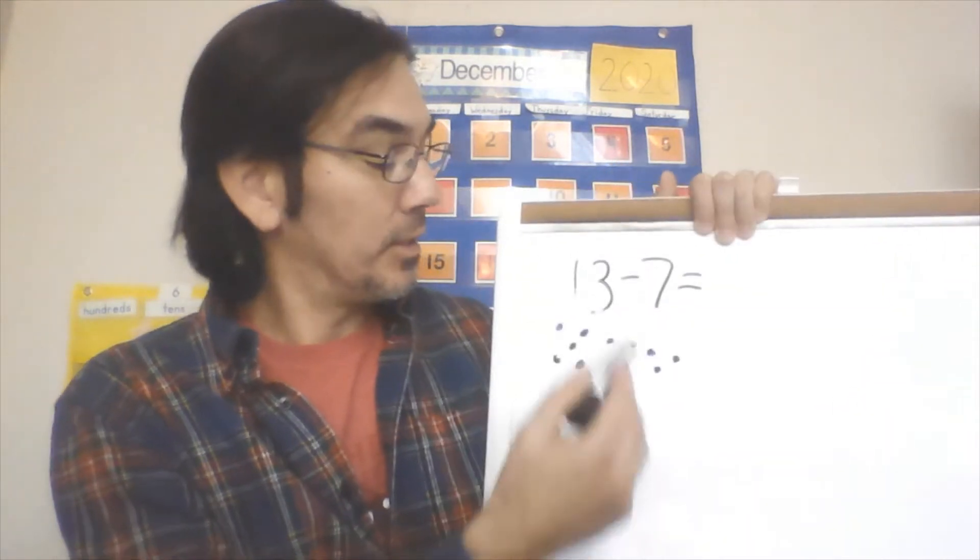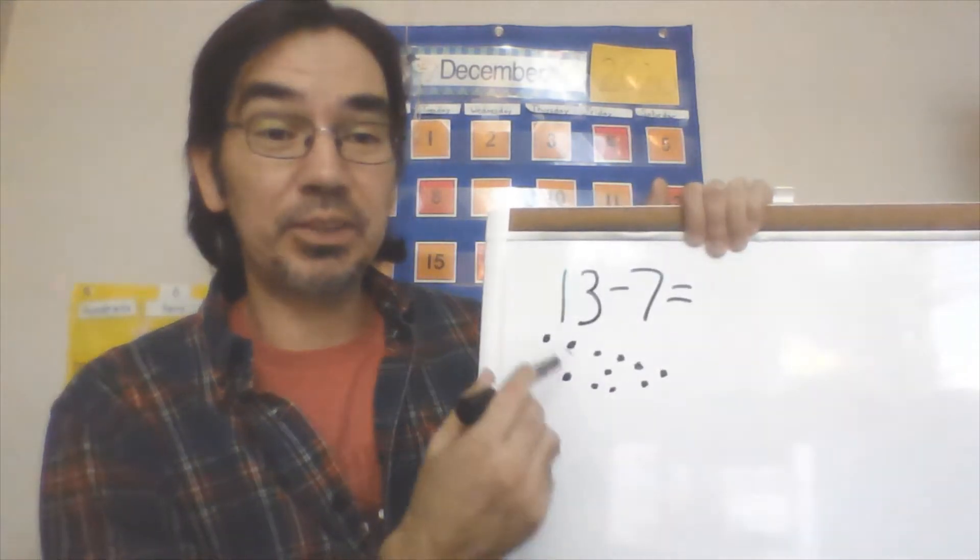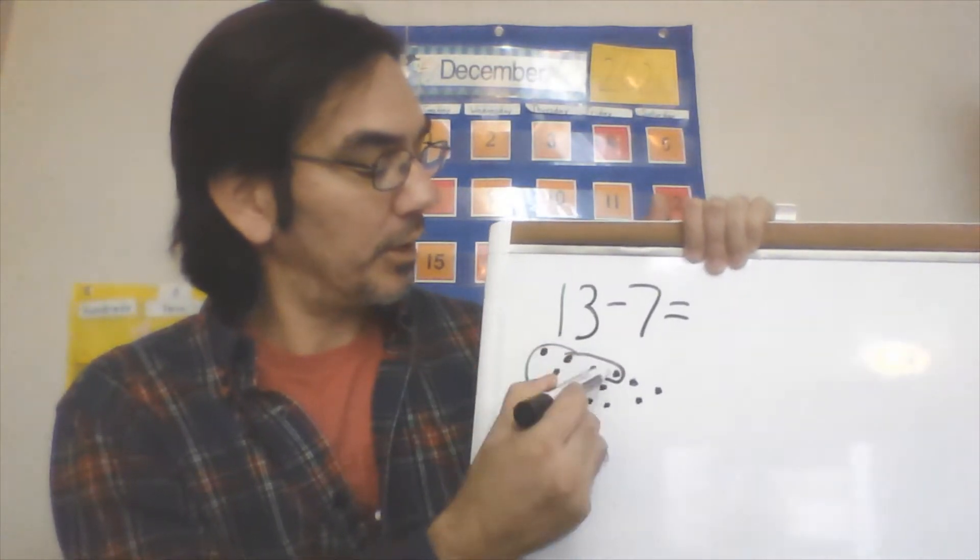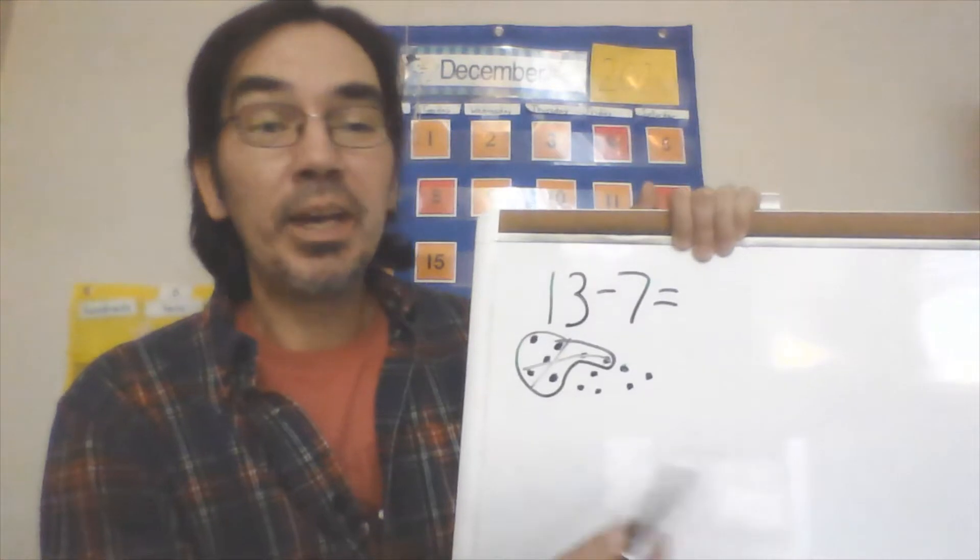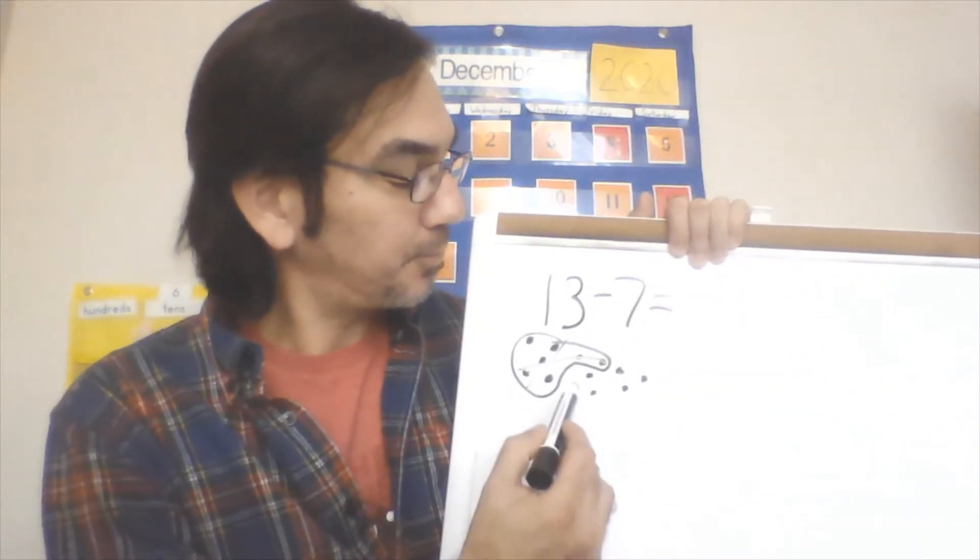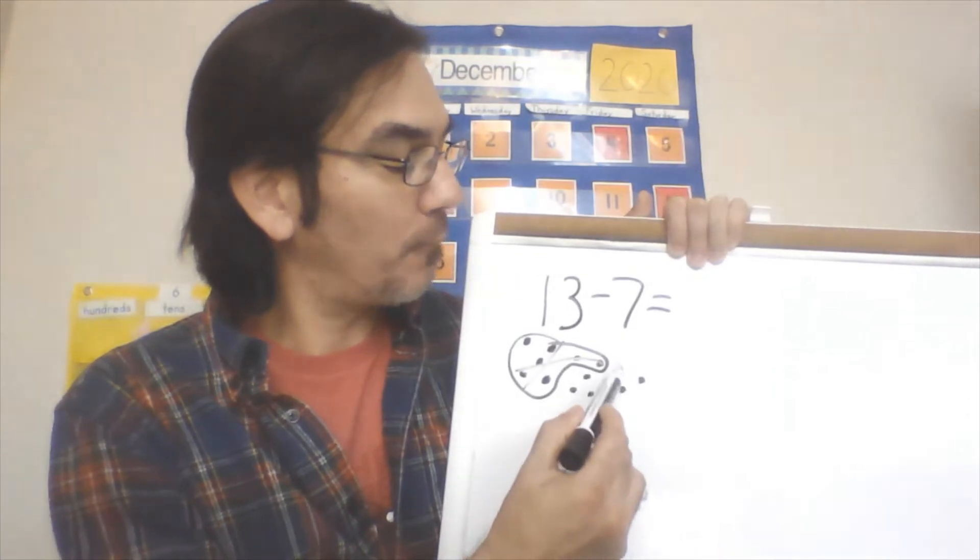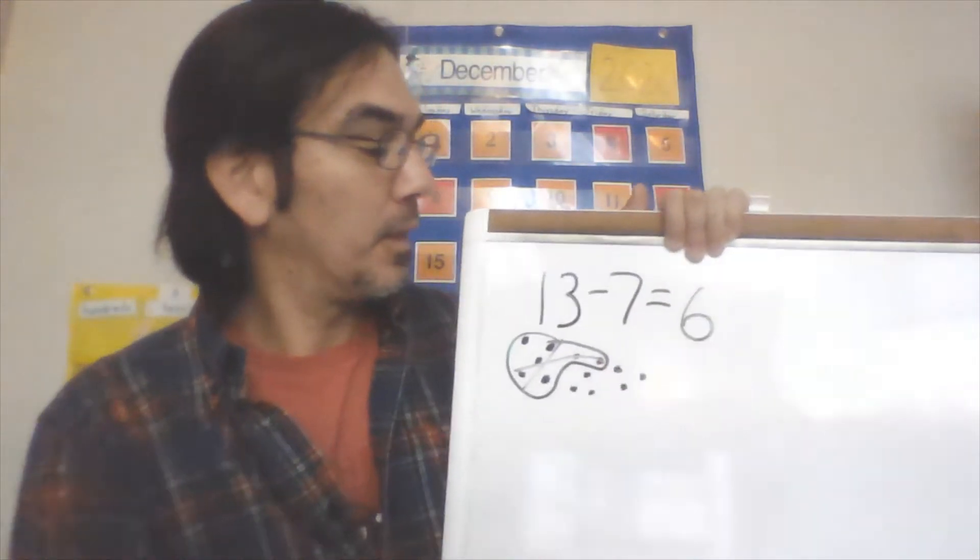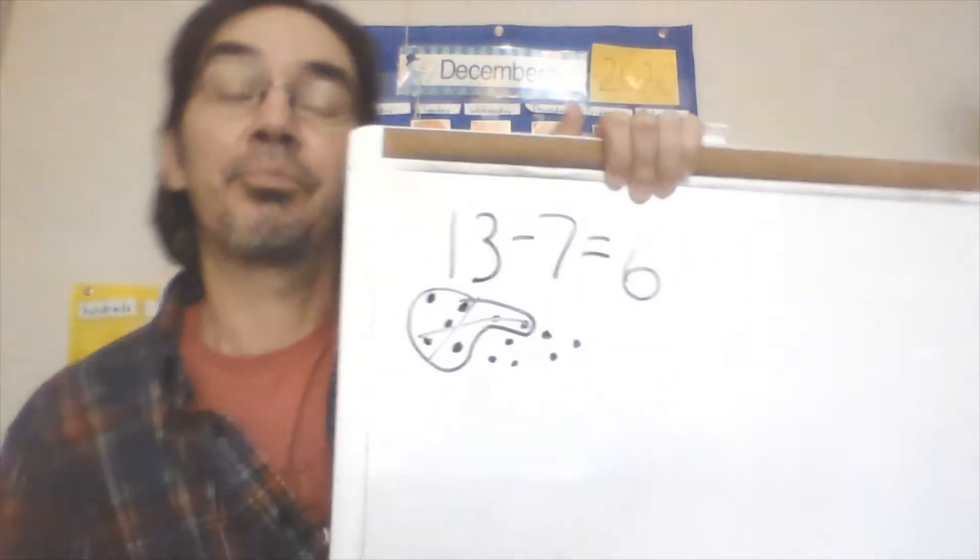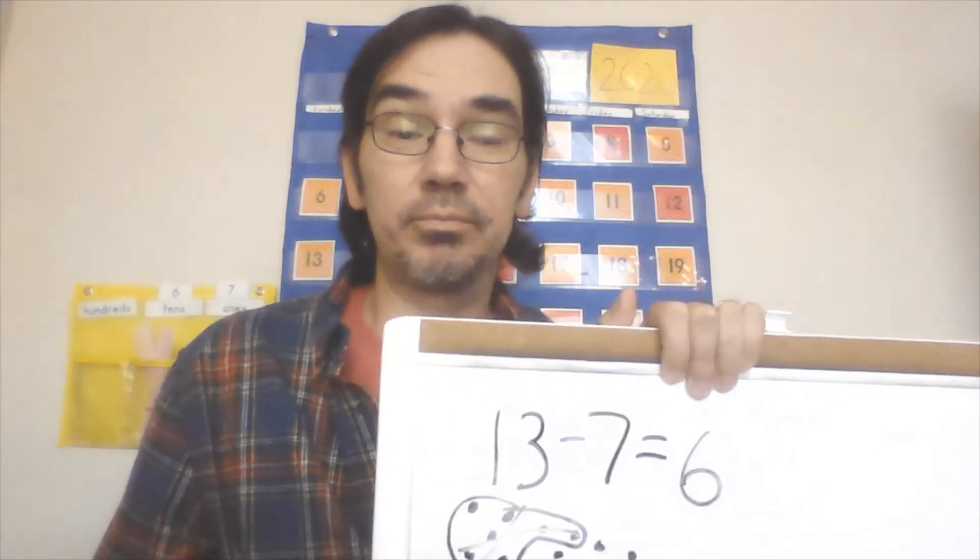Seven, right. So I'm going to circle and cross out seven of these dots. Here's five, here's six, and seven. There they are and we cross them out. Now to finish this up, all we do is count what's left over: one, two, three, four, five, six. 13 minus 7 equals 6.